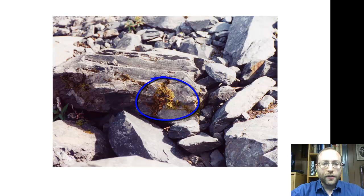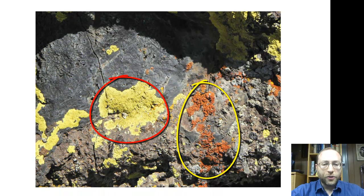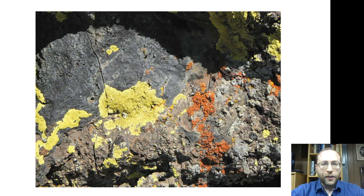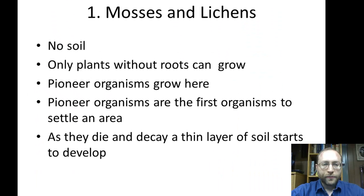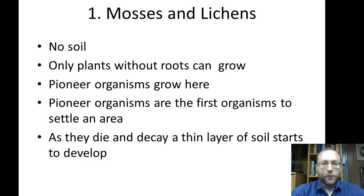Here we see the first community, and there's not much there — just some mosses and some lichens, which can also grow. Lichens are a dual species of both algae and fungi, and they help each other. One thing about these two types of species is that they don't require any soil; they can grow on bare rock. So here's our first community as we move away from the glacier — always in the first community, you have pioneer organisms, which are the first species that can settle in an area.